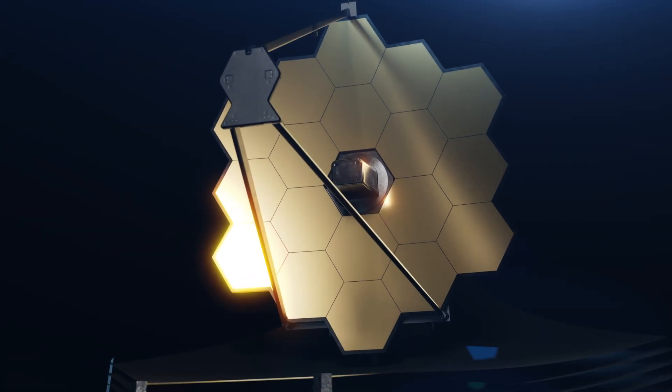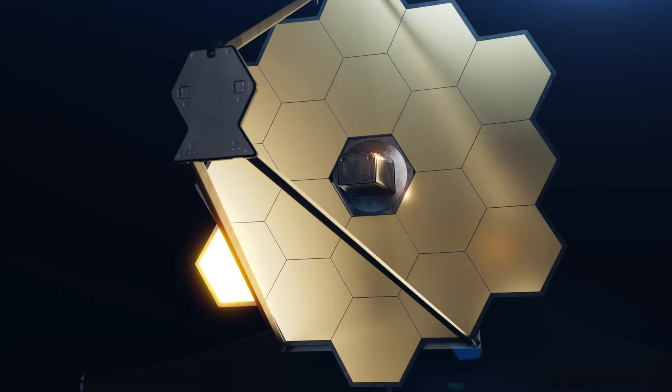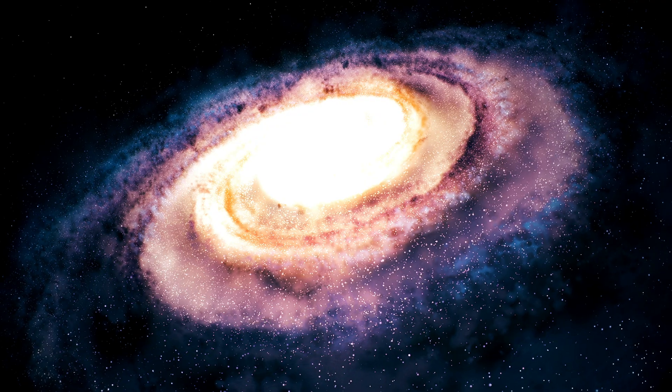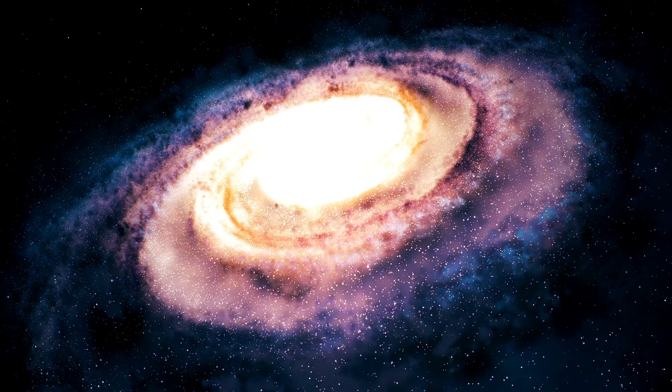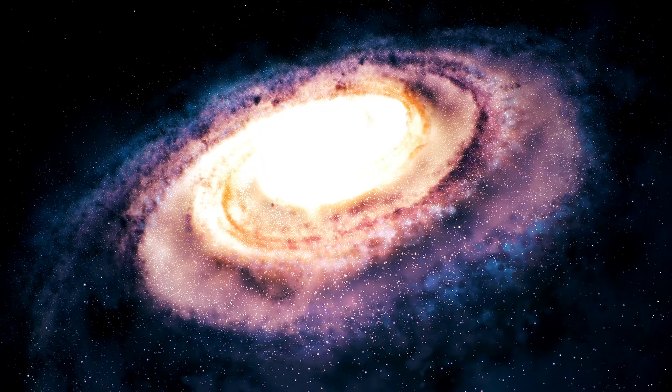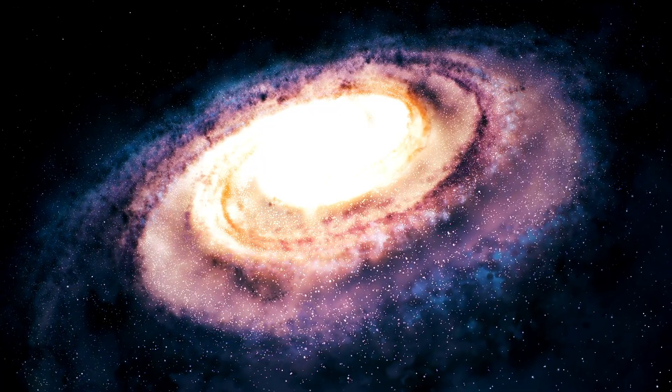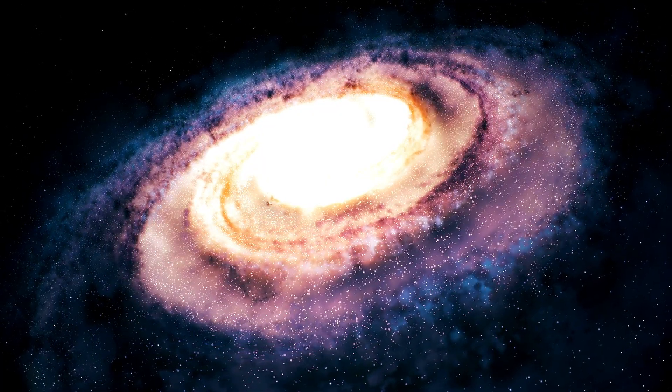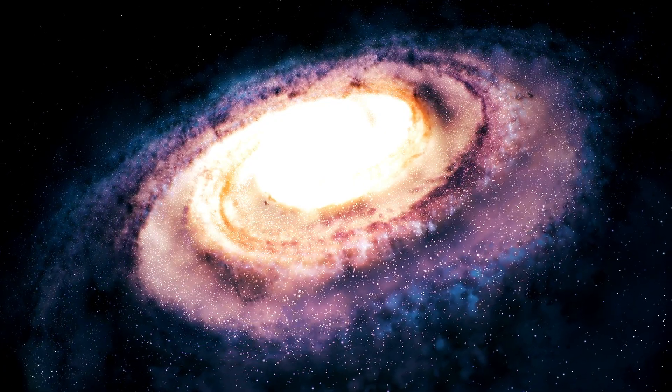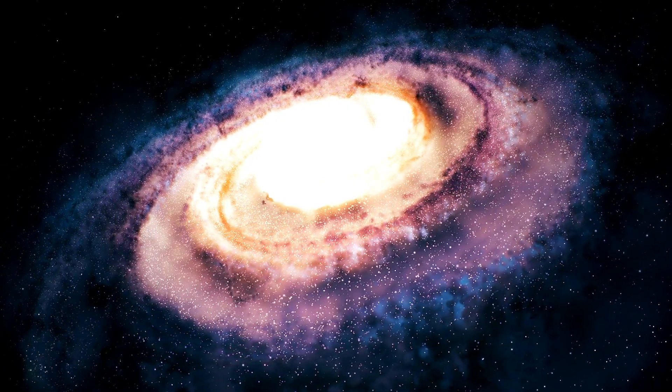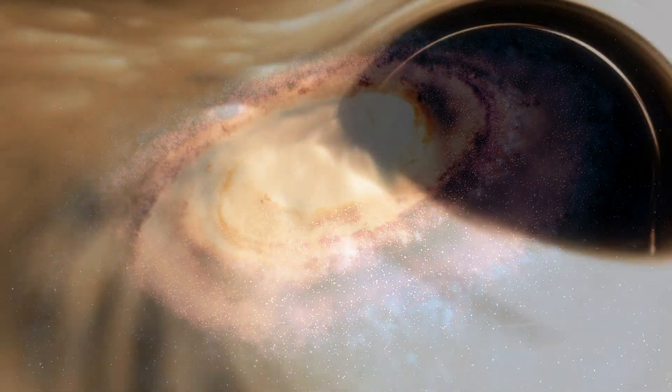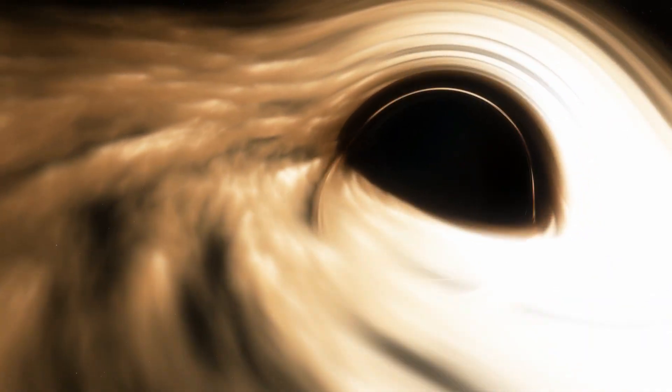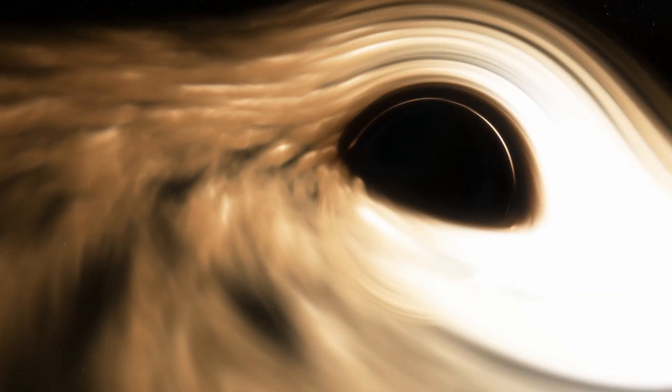These objects were far too bright, far too energetic for their apparent size. Some of them shine with the intensity of an entire galaxy, packed into a space smaller than the Milky Way's core. So what are they? One idea is that we're seeing supermassive black holes caught in the act of feeding. Their accretion disks blazing so fiercely that they outshine everything around them. But even that doesn't quite fit.